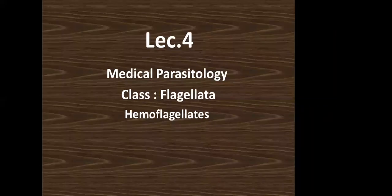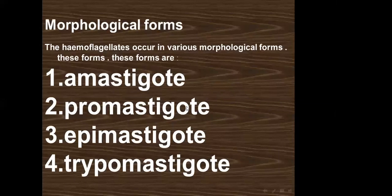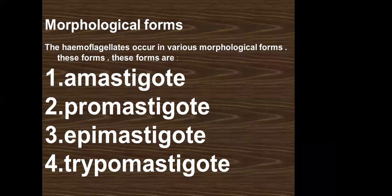Another species of flagellates include haemoflagellates. The stages or morphology of haemoflagellates include four stages: amastigote, promastigote, epimastigote, and trypomastigote.